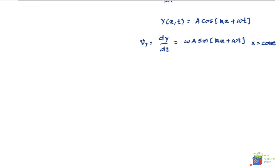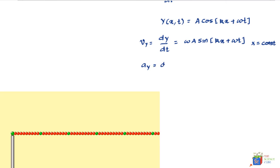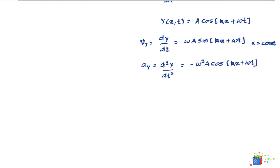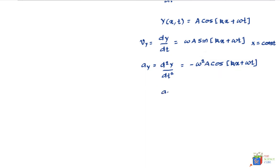We can also find the acceleration of a particle in the y direction by differentiating dy/dt once more. The acceleration a_y = d²y/dt² = −ω²A cos(kx + ωt). Since A cos(kx + ωt) is just the displacement y(x, t), we can write a_y = −ω²y(x, t), which is the classic simple harmonic motion equation.